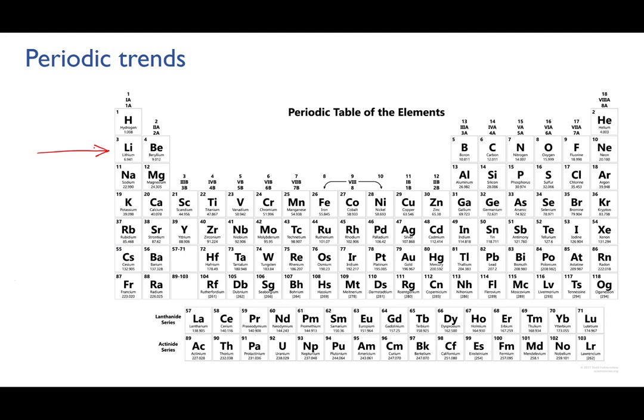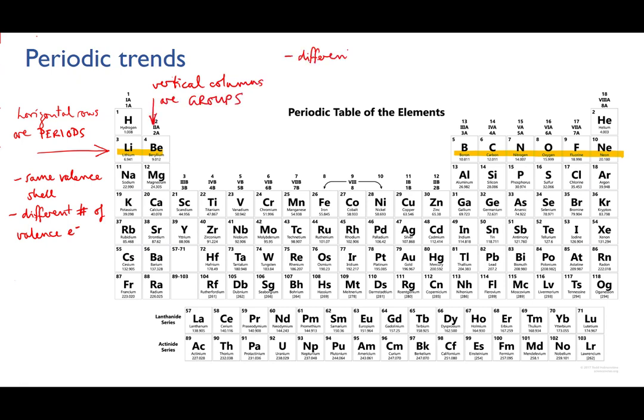Just as a quick reminder, horizontal rows in the periodic table are known as the periods. Atoms in the same period have the same outermost electron shell, the same valence shell, but they'll have different numbers of valence electrons in it. Vertical columns on the table are known as groups. Each atom in a group will have a different electron level as its valence shell, but they'll have the same number of valence electrons in that shell.